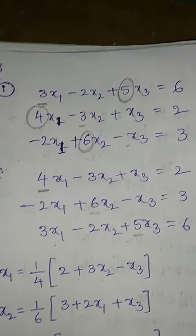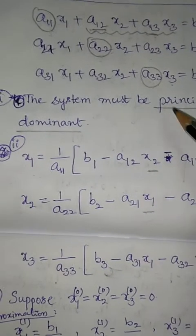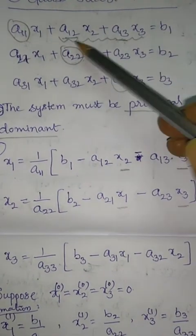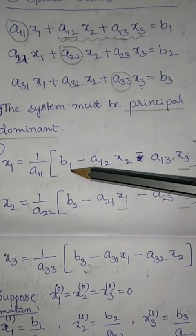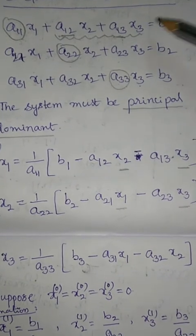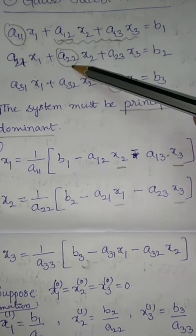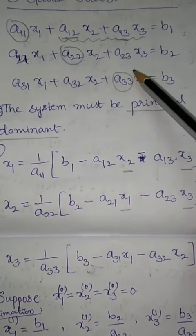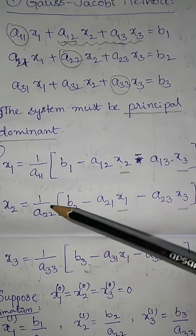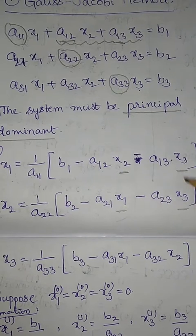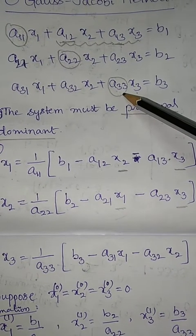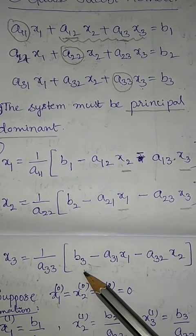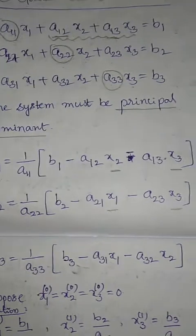Once the system is principal dominant, we express x1 from the first equation: x1 = (1/a11)(b1 − a12·x2 − a13·x3). Since in the second equation the x2 coefficient is dominant, x2 = (1/a22)(b2 − a21·x1 − a23·x3). Since in the third equation x3 coefficient is dominant, x3 = (1/a33)(b3 − a31·x1 − a32·x2).